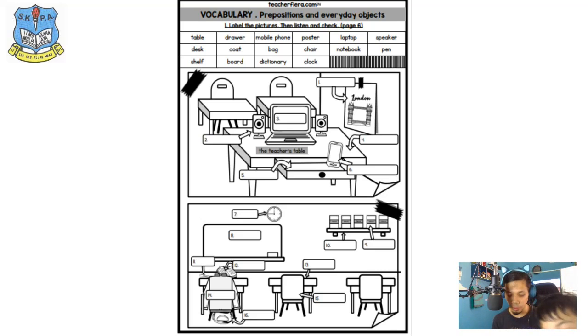Okay, now for the answers I'm going to read you the answers based on the numbers. Cikgu akan bagi jawapan berdasarkan nombor. So for the top picture, answer for number one is poster. Okay, you got that? Number two is speaker. Number three is laptop. Number four is table. And number five is drawer. Number six, mobile phone.